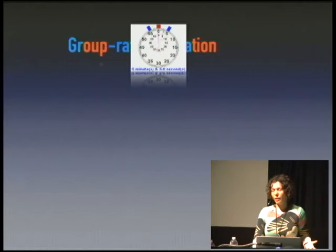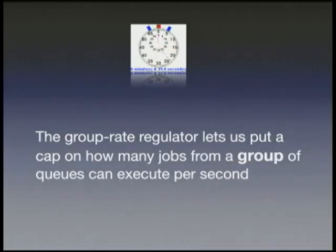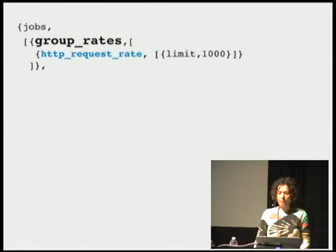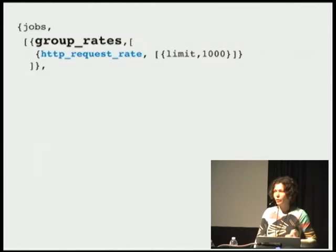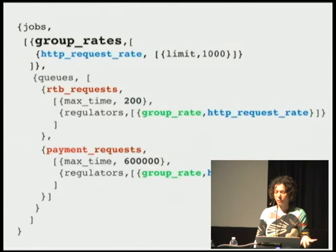Now we had to split our HTTP request into two different queues. What if we still want our HTTP requests coming in at a certain maximum pace? For that, Jobs offers a third type of regulation: group rate regulation. It's very similar to rate regulation, but it lets you put a cap on how many requests per second are coming in from a group of queues. We create a group rates entity called HTTP request rate, limit it to a thousand per second, and assign this group rate regulator to both our RTB requests and our payment requests.